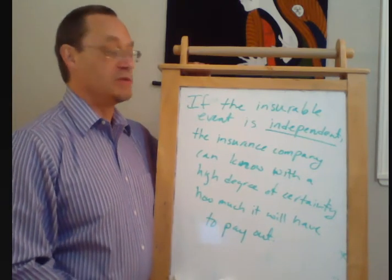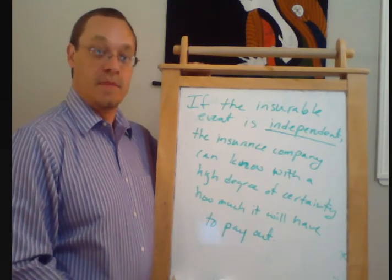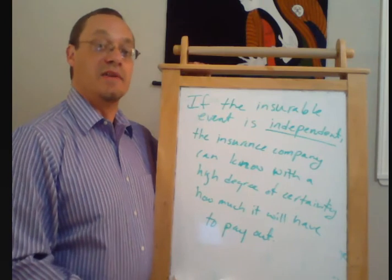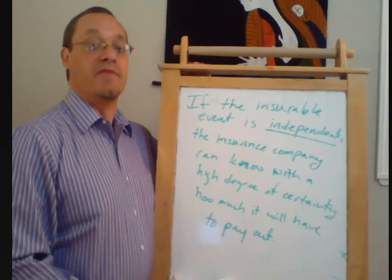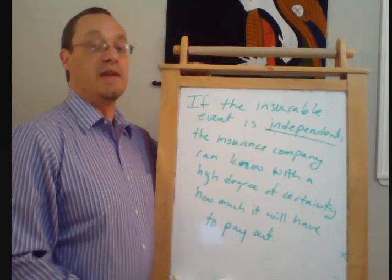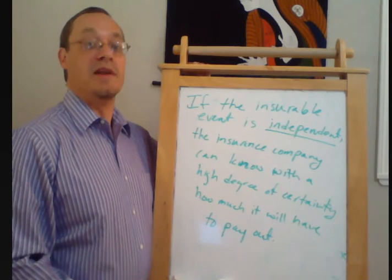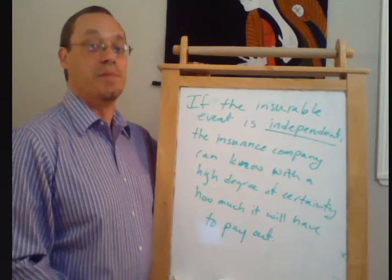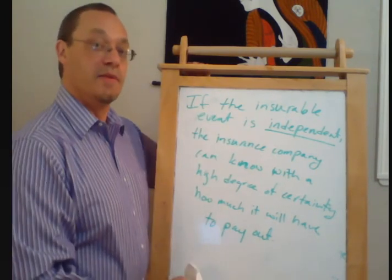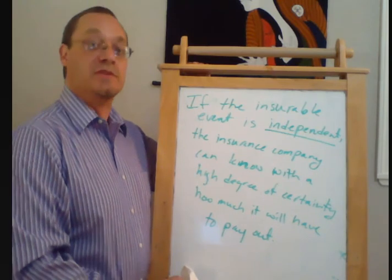Insurance markets work well when the underlying events are independent. When the underlying events are correlated or dependent, insurance markets don't work very well. That's why it's often much easier to get insurance for events like life insurance, health insurance, car insurance, or homeowner's insurance than it is for flood insurance, hurricane insurance, or earthquake insurance — because those things are very unpredictable and very hard for the insurance company to plan around. It's going to turn out that the law of large numbers will also help us when thinking about investment, and that'll be our next topic.